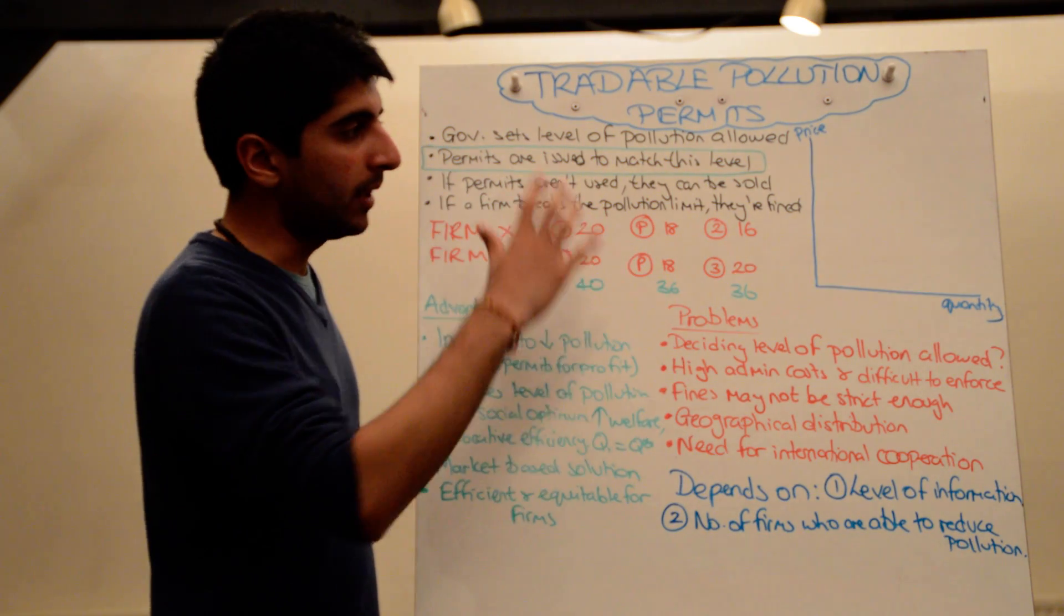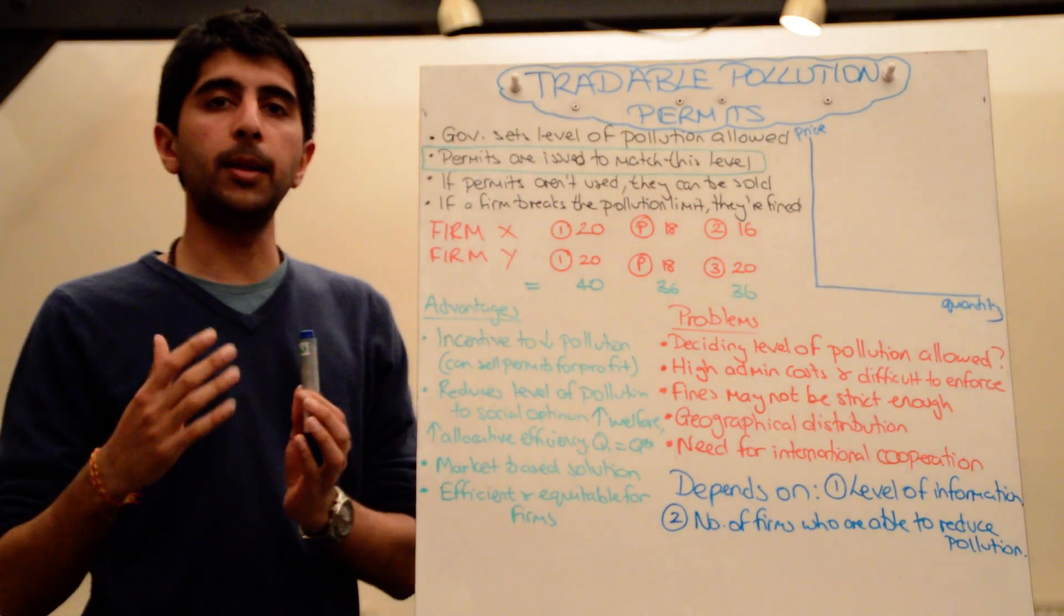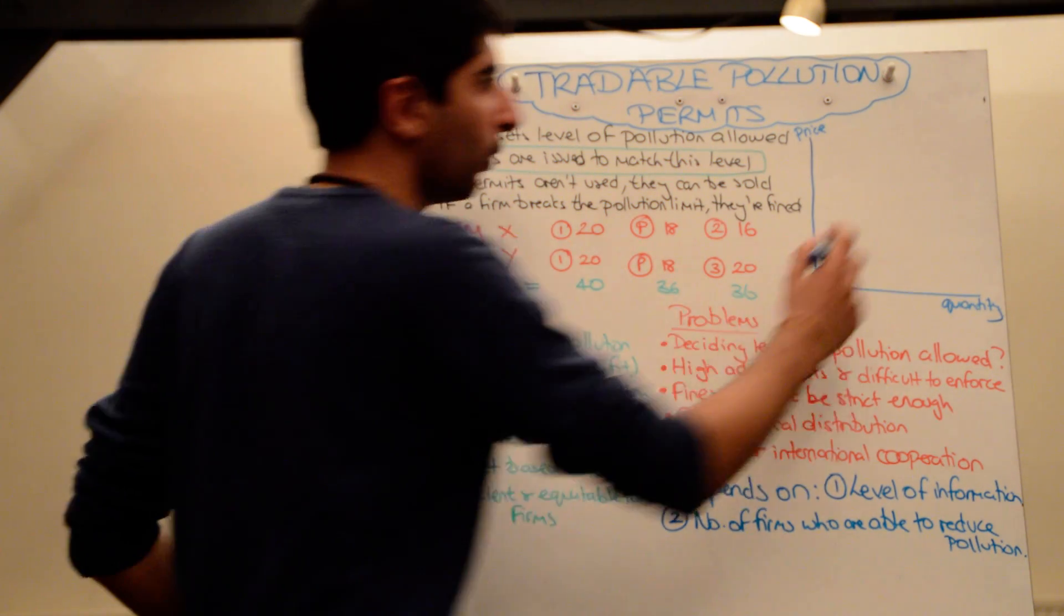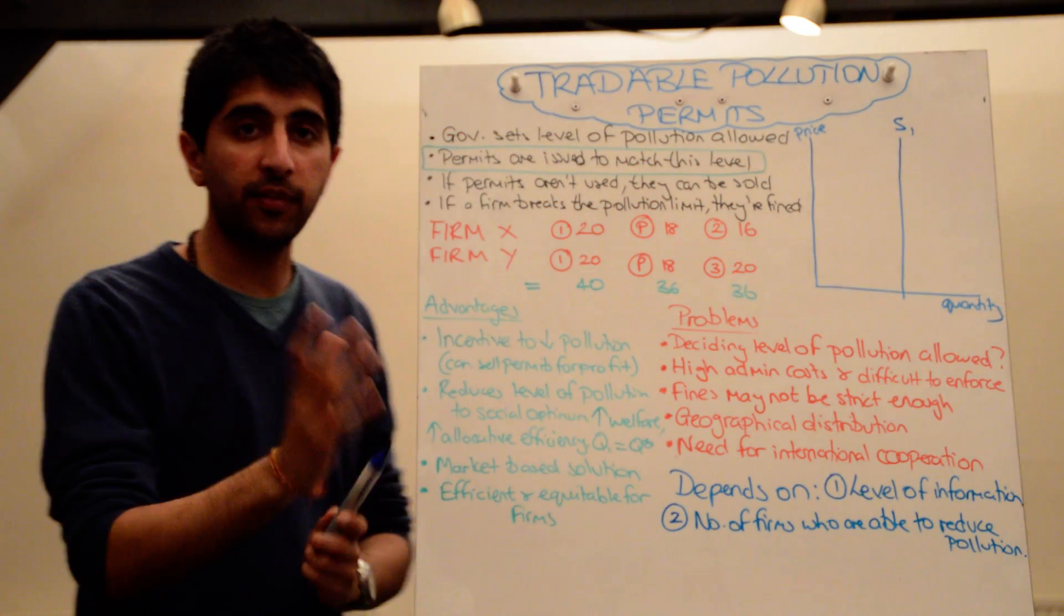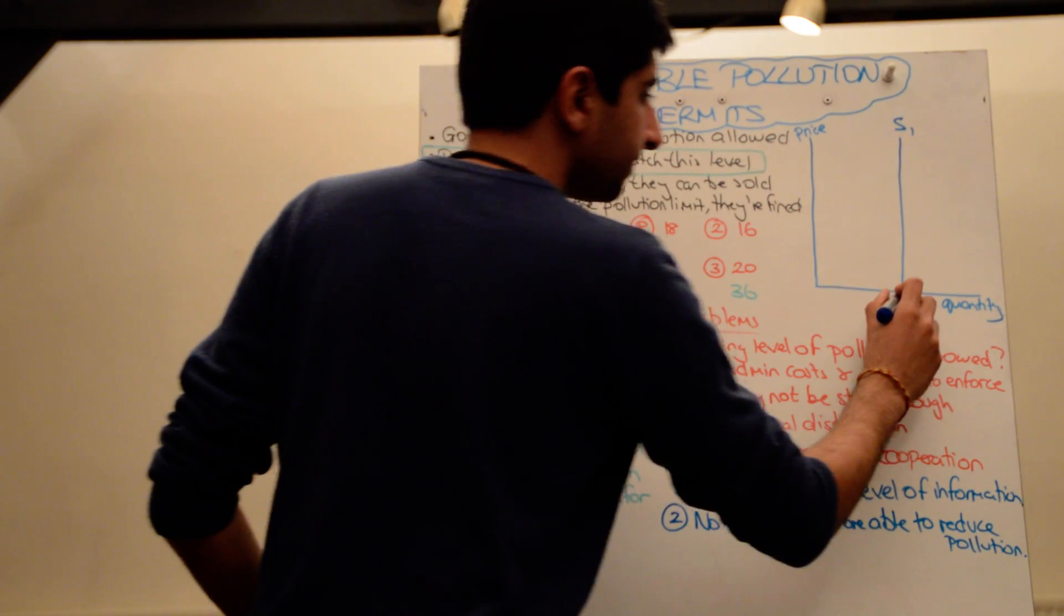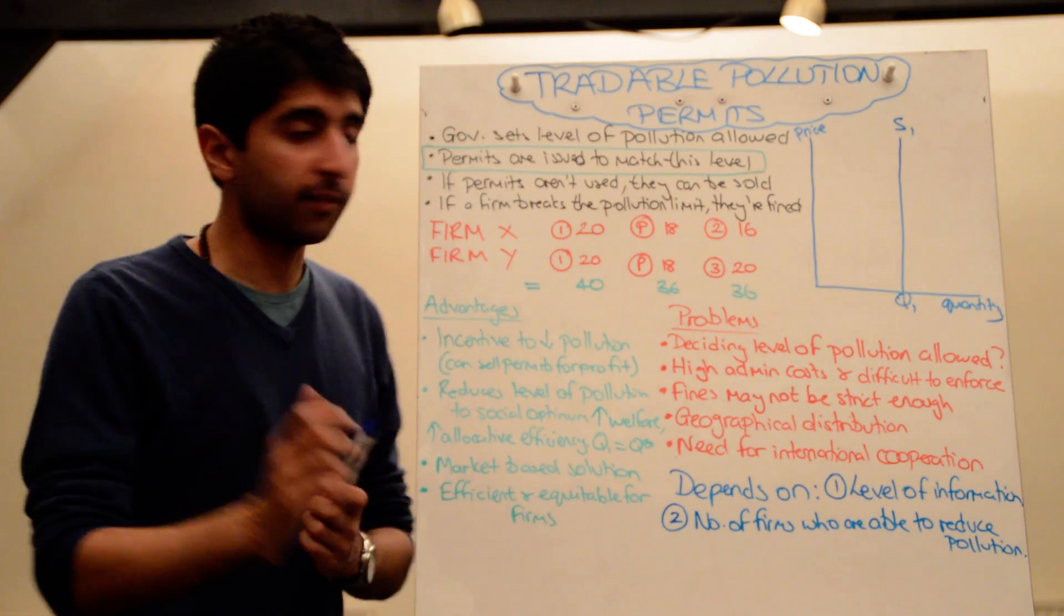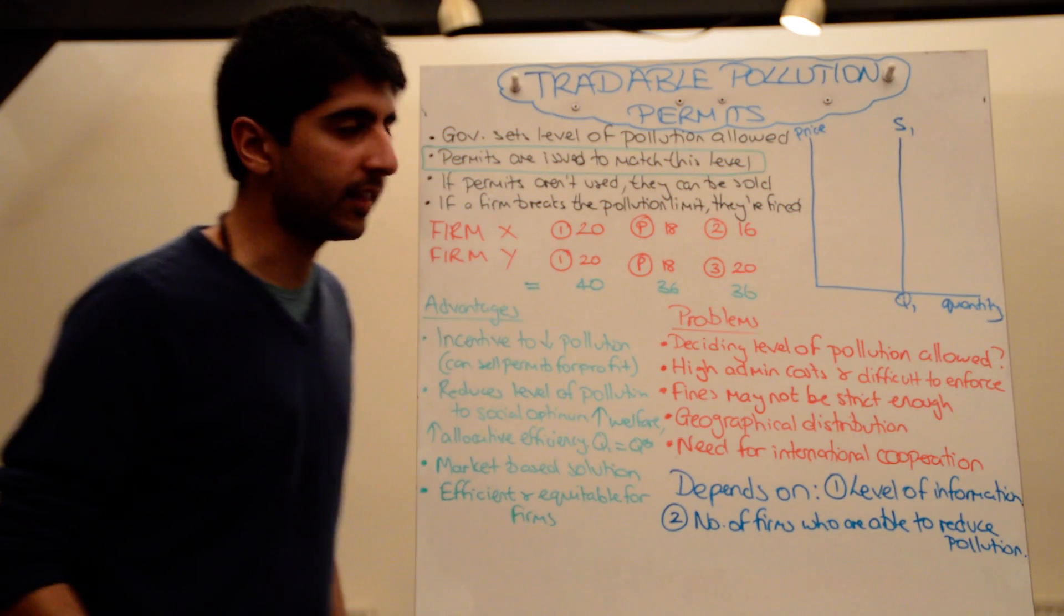The beauty with this scheme is that it's a market-based scheme. The price of permits are determined by demand and supply. So if we look on the right here, this is the market for pollution permits. The government fixes the level of permits that are around in the economy at S1. That's a fixed level. So Q1 level permits are distributed by the government. The government decides what Q1 is.